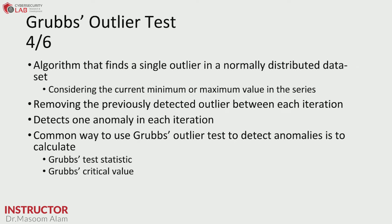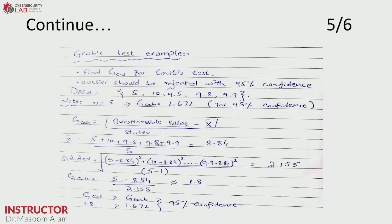The second method is the Grubbs Outlier Test. We perform a test on the series, and the notably important thing is that we remove the previously detected outlier between each iteration. So in each iteration, we try to remove one outlier from the series.